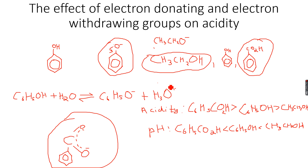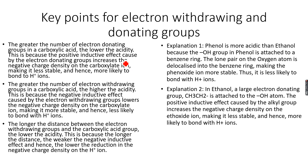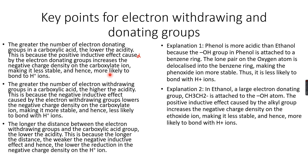Ethanoic acid is the least acidic. Those are the explanations for the comparison between benzoic acid, phenol, and ethanoic acid. Now, the key points: the greater the number of electron-donating groups in a carboxylic acid, the lower the acidity. This is because the positive inductive effect caused by the electron-donating groups increases the negative charge density on the carboxylate ion, making it less stable and hence more likely to bond with H+ ions.